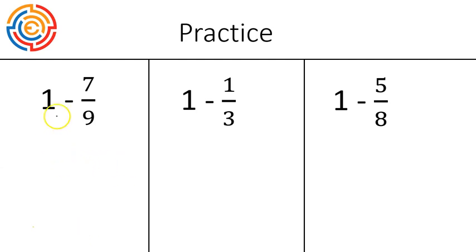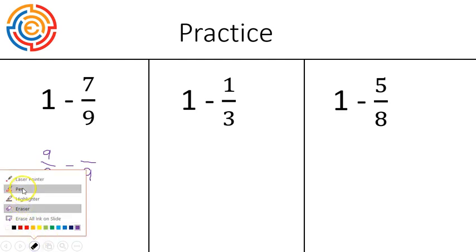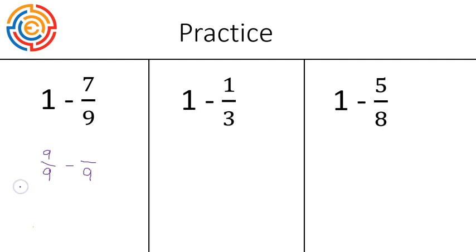With each of these whole numbers, we have to make them into fractions. So one becomes nine over nine. The reason I'm picking the number nine is because I have to match the denominator from the second fraction. So it becomes nine out of nine minus seven out of nine, which leaves us with two out of nine.